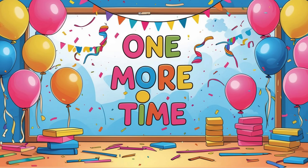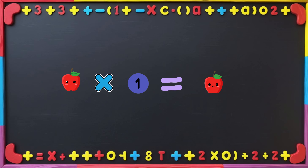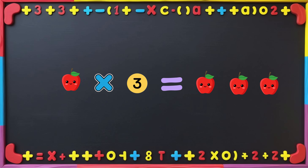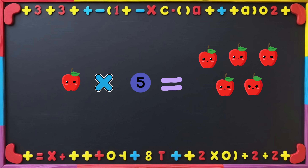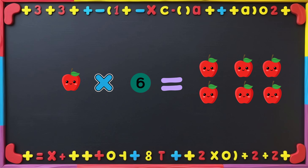Now one more time. Here we go. 1 times 1 is 1. 1 times 2 is 2. 1 times 3 is 3. 1 times 4 is 4. 1 times 5 is 5.